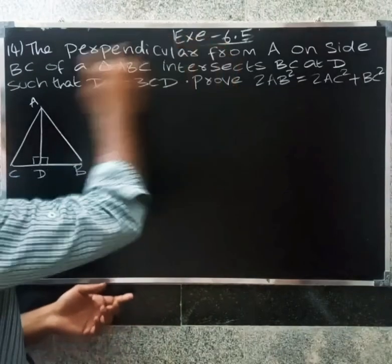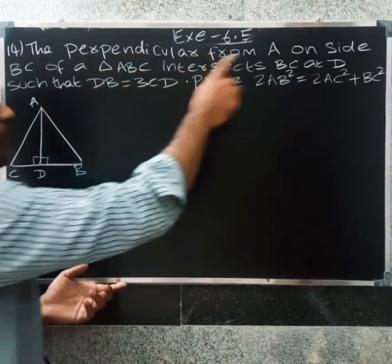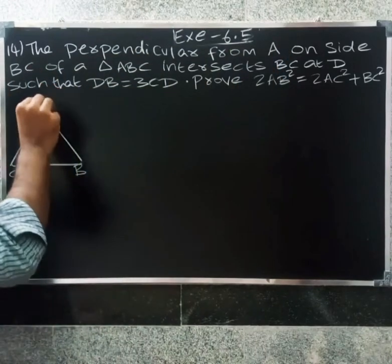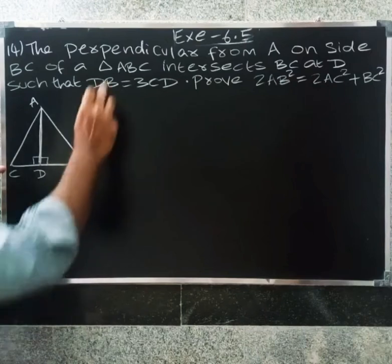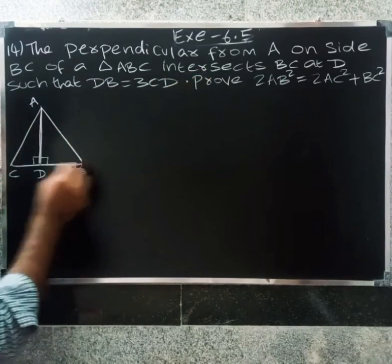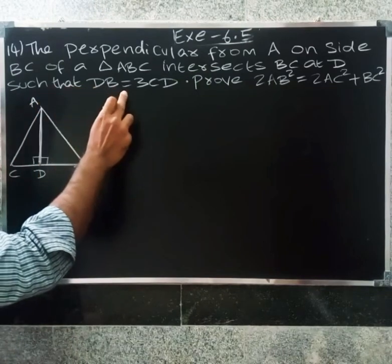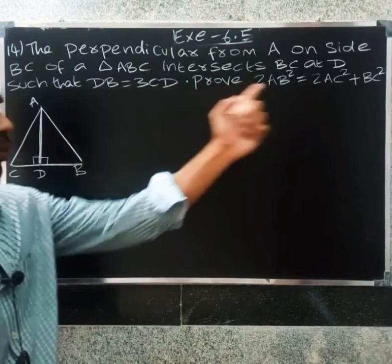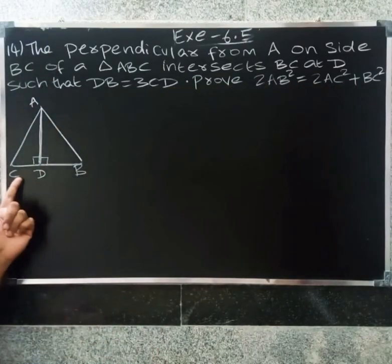Friends, X is 6.5 and you can ask 14 questions. The perpendicular from A on side BC of a triangle ABC intersects BC at D, such that DB equals 3CD. Prove that 2AB square equals 2AC square plus BC square.